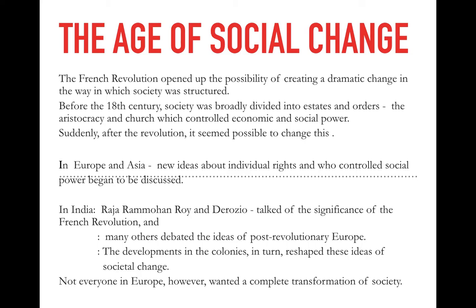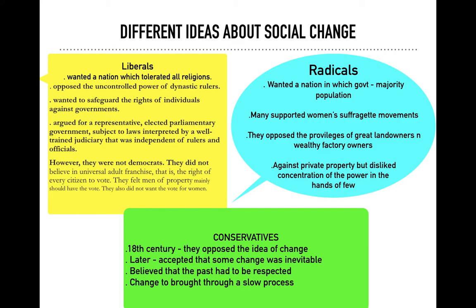However, not everybody in Europe was in favor of change. Everybody had different notions about change — some wanted drastic, abrupt change, and some wanted slow changes. Because of the different degrees of change that people wanted, we can say that the people in Europe were divided into three main categories: liberals, radicals, and conservatives. They all had different thoughts about change.